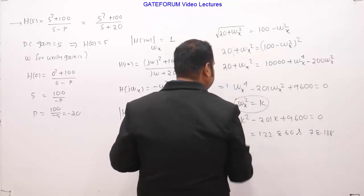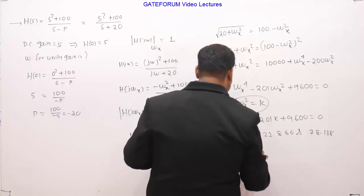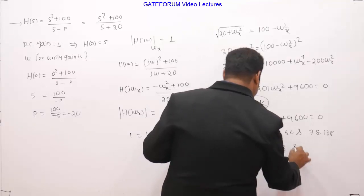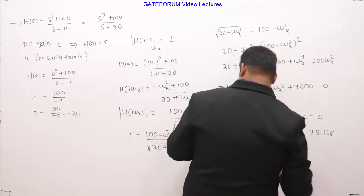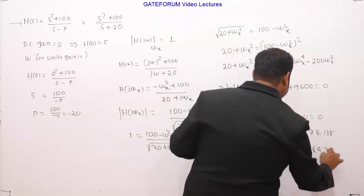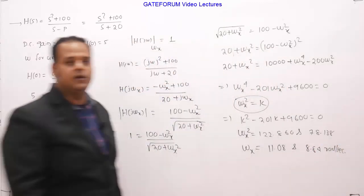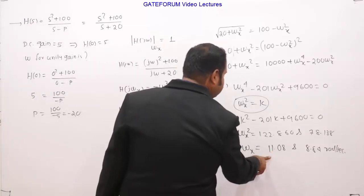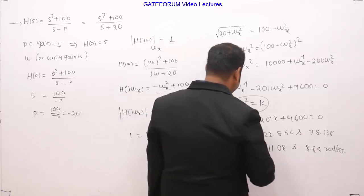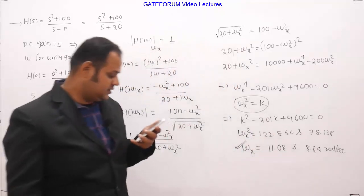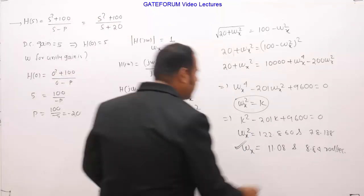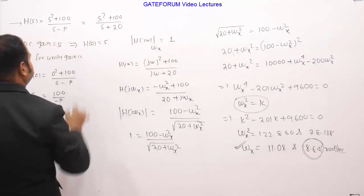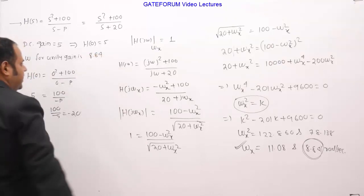k is omega x square, so omega x square equals to this. Then if we take square root of this, we are getting 11.08 with respect to this and with respect to 78.138 we are getting 8.84 in radian per second. We are not taking the negative roots because frequencies are in general positive in nature. So in these two frequencies at 11.08 and 8.84 the gain will be unity, but we are supposed to find the smallest frequency. So the smallest one is 8.84. When the frequency is 8.84 then the gain of this transfer function is unity.